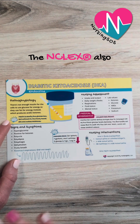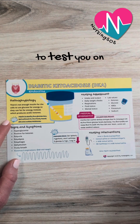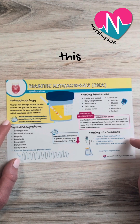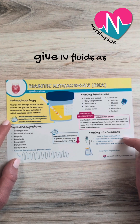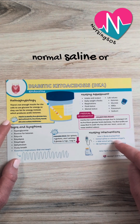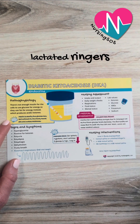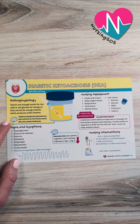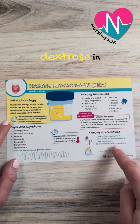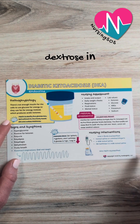The NCLEX also loves to test you on nursing interventions for this. You're going to give IV fluids as prescribed — normal saline or lactated Ringer's, then 0.45% normal saline, and 5% dextrose in half normal saline.